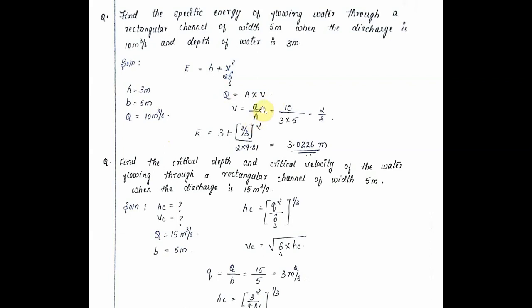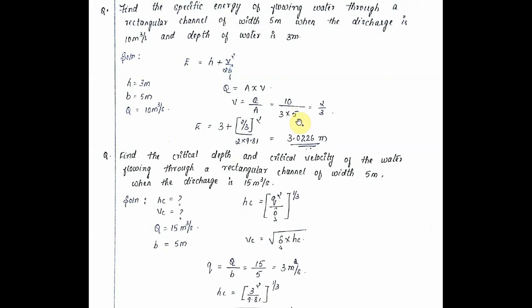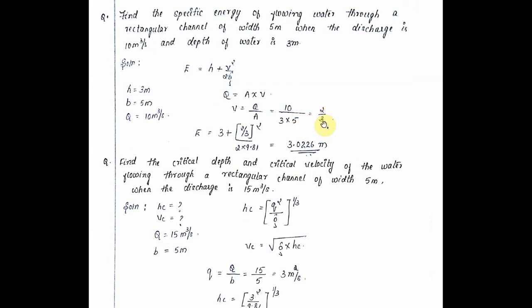That is equal to 10 divided by 3 into 5, which equals 2 by 3. Therefore E equals h, which is 3, plus v squared upon 2g. That's 2 by 3 squared divided by 2 into 9.81, which is equal to 3.026 meters.